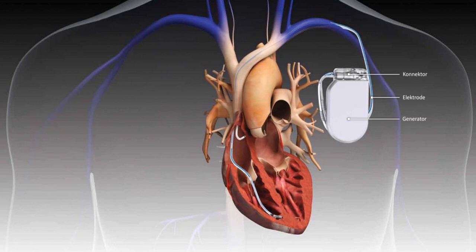As far as primary prevention, I have a couple of pictures up here to serve as triggers. The magic number is an EF equal to or less than 35%. Anyone with an EF of 35% or less, regardless of whether they've ever had VTach, VFib, or unexplained syncope, is found to benefit in terms of morbidity and mortality from having a cardioverter defibrillator placed. The most common cause is ischemic cardiomyopathy.